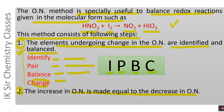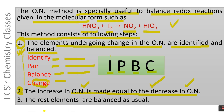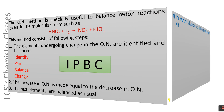Recall that in the ion-electron method, the number of electrons lost in the oxidation half reaction is made equal to the number of electrons gained in the reduction half reaction. But in the oxidation number method, the increase in oxidation number is made equal to the decrease in oxidation number. In the third and final step, the remaining elements are balanced as usual, as discussed in the ion-electron method.